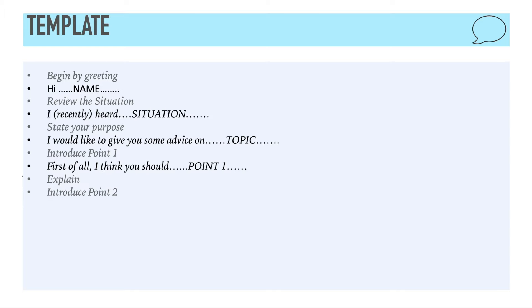Then, you're going to introduce point number two, and the structure you use for that is, another thing you could do is, followed by advice number two. Remember, if the question says, what are some of the things this person should and should not do, your second piece of advice should be focused on something that the person should not do. And for that, we have a different structure. The structure is, having said that, I think you should avoid point two. So, that's for when you need to give one piece of advice focused on what the person should not be doing.